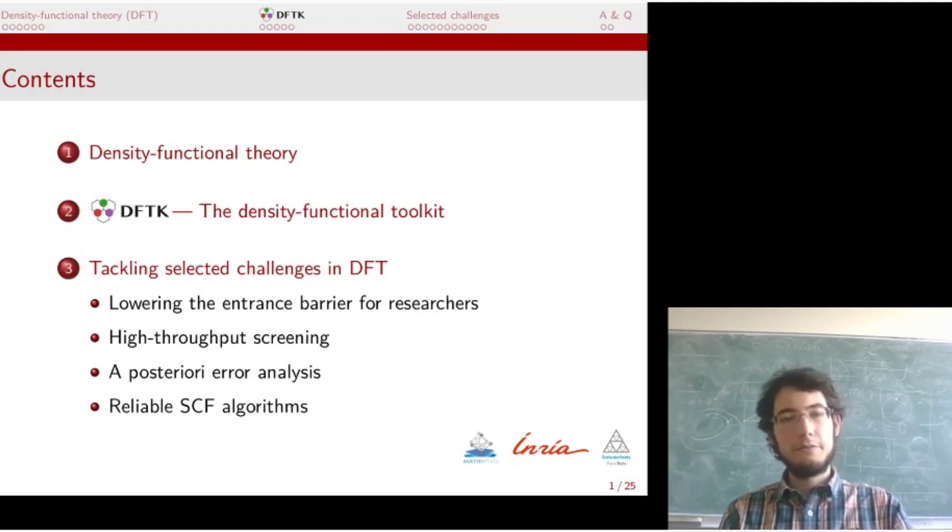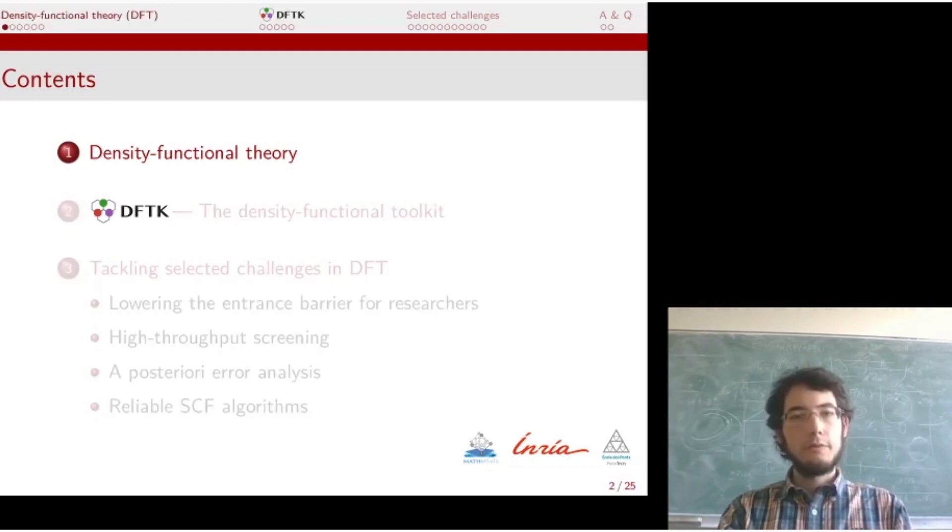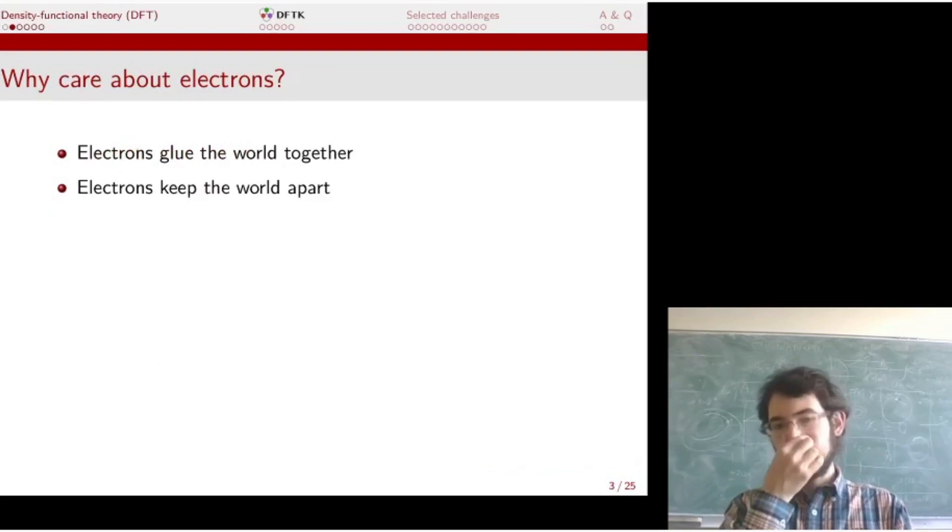Before going into the challenges that we wish to address with DFTK and our Julia code, I'm going to give you a bit of background on density functional theory, just so you get an idea of the challenges and problems of the subject. The whole idea of density functional theory and electronic structure theory is to provide a physical description of electrons. You might ask why care about electrons. From my personal point of view, the funny thing is they are strange beasts because electrons glue things together. You can easily find out if you try to bite into a piece of steel—it's not that fun. Electrons want to keep things together. But at the same time, electrons also keep things apart.